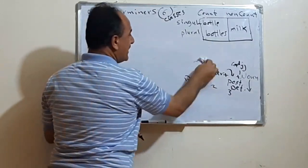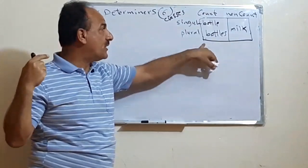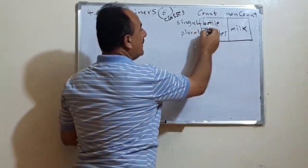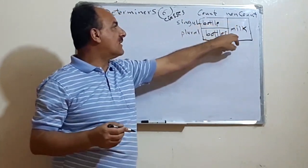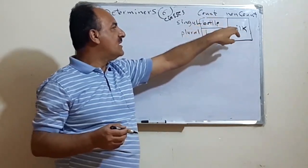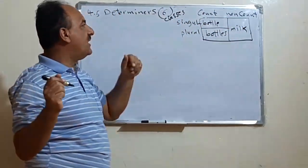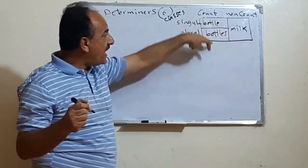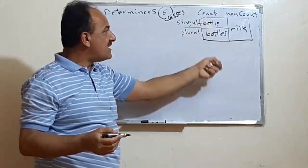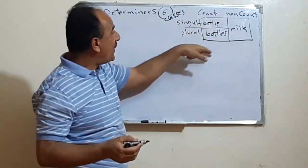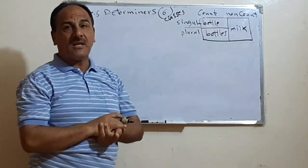These six types of determiners are used according to the type of noun. All nouns in English are either countable or uncountable. Countable nouns can be singular or plural — bottle, bottles; street, streets; wall, walls; pen, pens. The six types of determiners are limited or used according to this division.